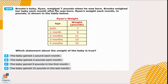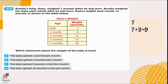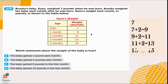Question number 18. Brooke's baby Ryan weighed 7 pounds when he was born. Brooke weighed her baby each month and the weights are shown in the table. Which statement about the baby's weight is true? At birth his weight was 7 pounds. After one month he gained 2 pounds — his weight was 9 pounds — and each month he continued to gain 2 pounds. Option A says the baby gained 1 pound each month — that's wrong. Option B says the baby gained 2 pounds each month — that is correct. So, option B is the correct answer.